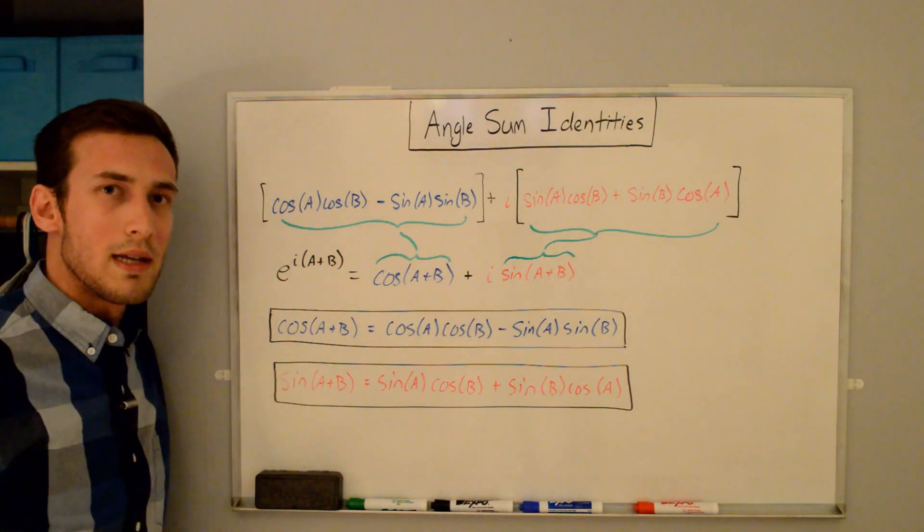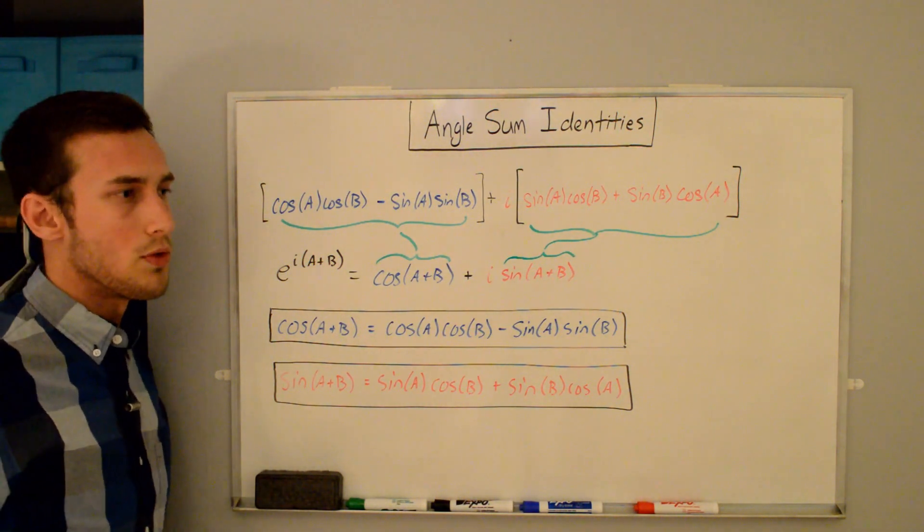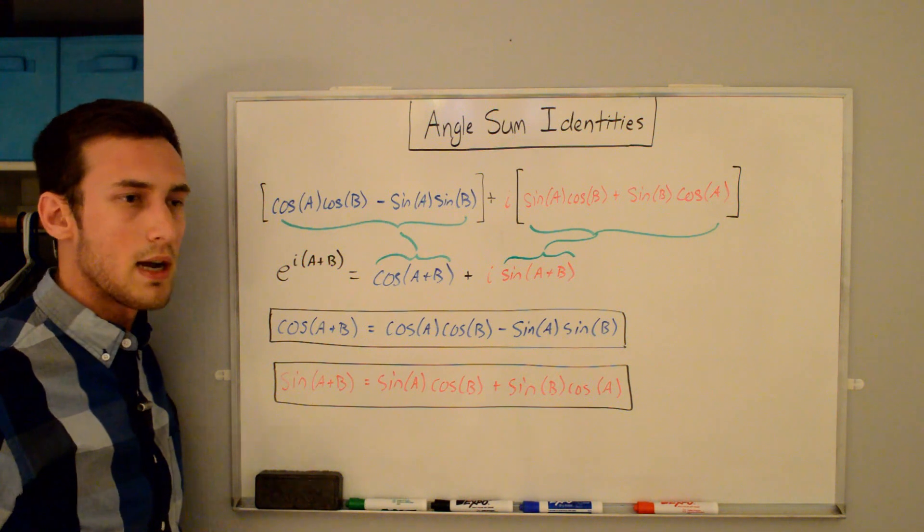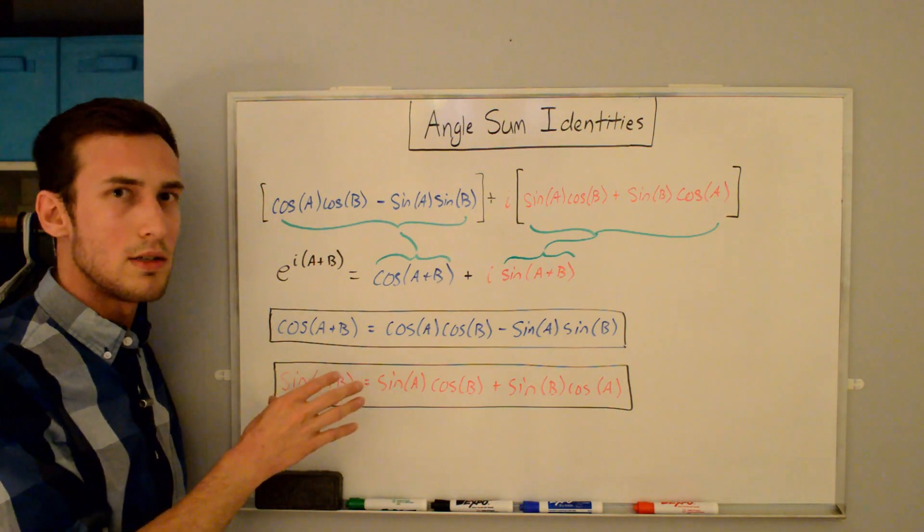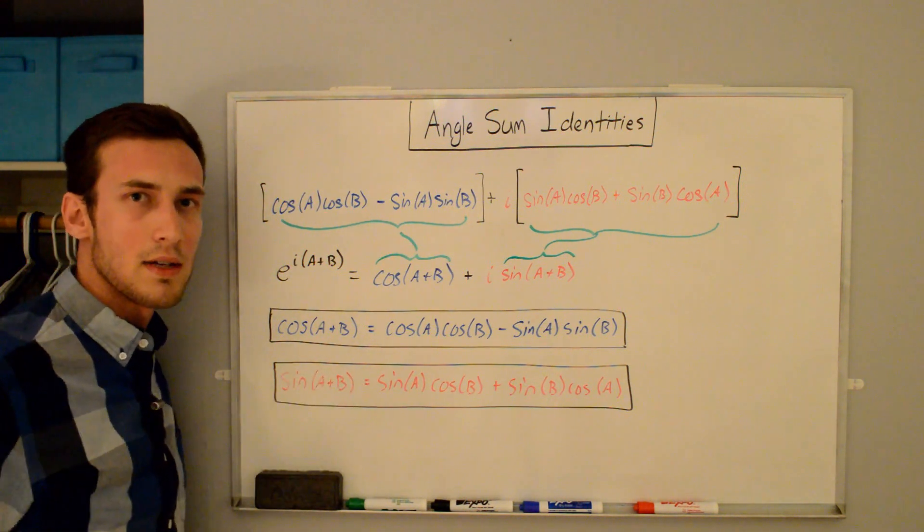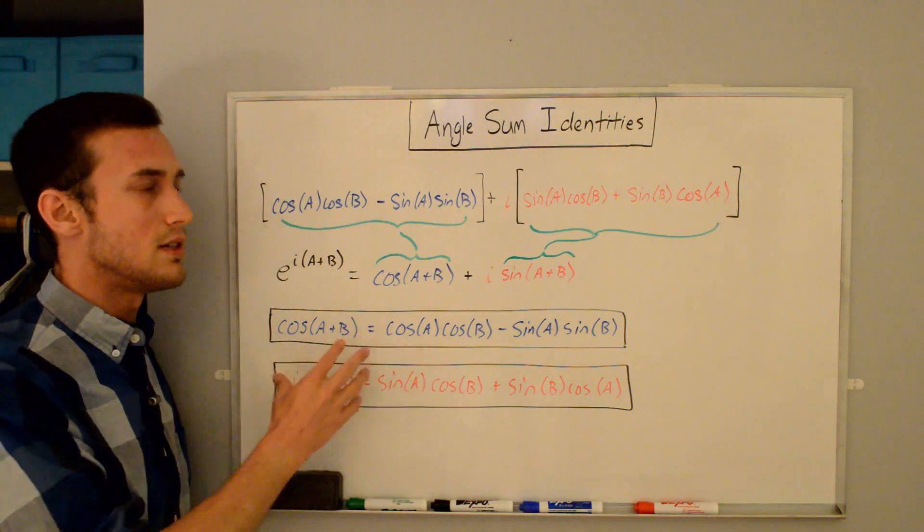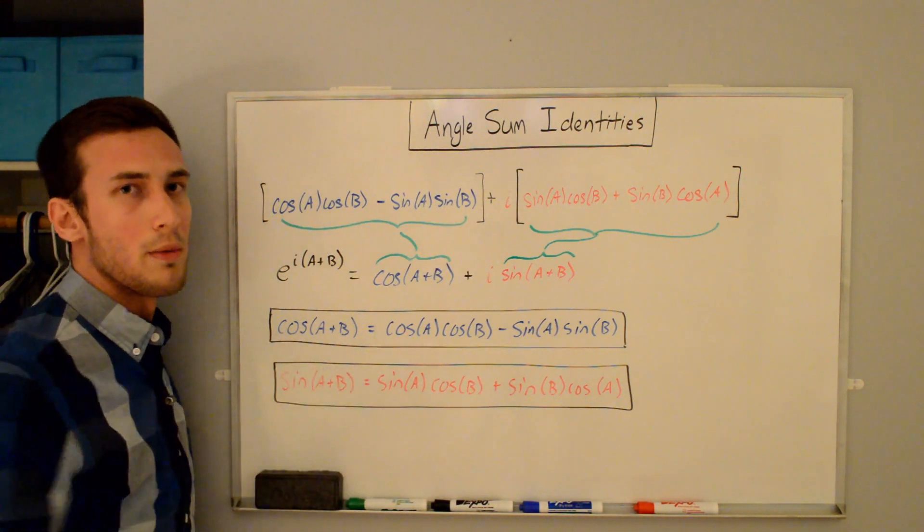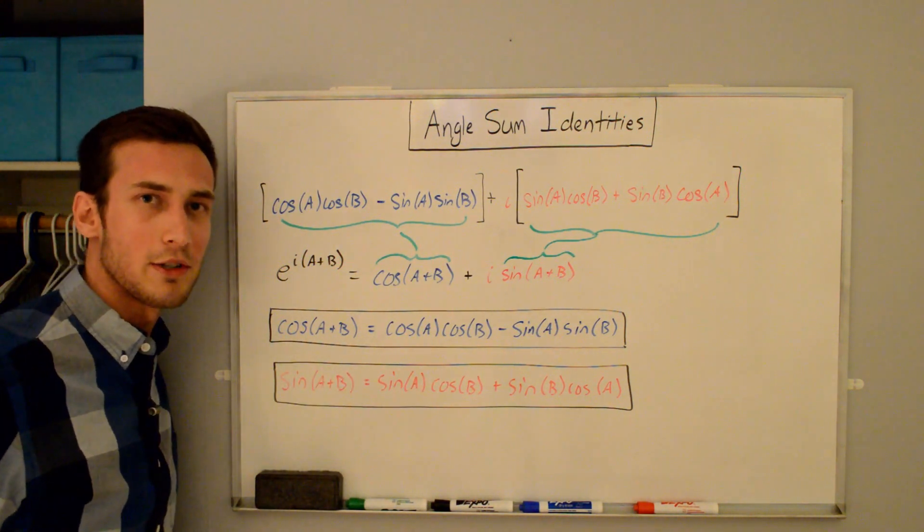And while this isn't really a proof, there is a geometric proof that you can find online. But this one, I think, is easier if you're taking a test and you forget what these formulas are and you need to derive it. It's easiest to go from this Euler's formula derivation. So thanks for watching.